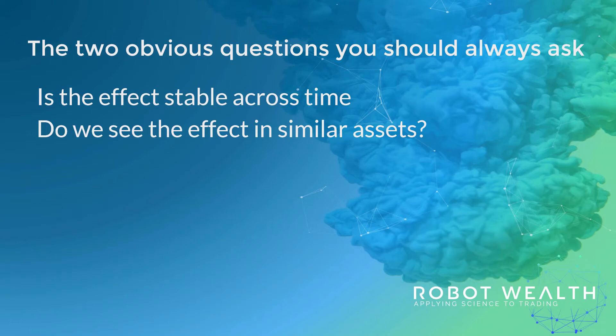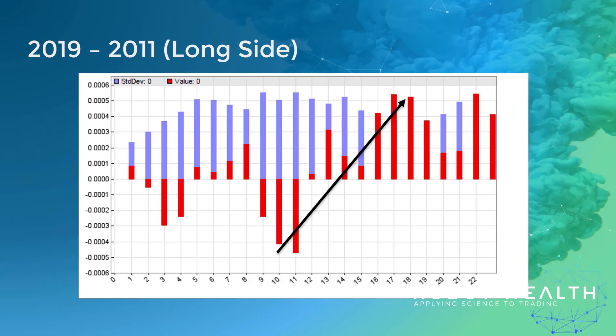I'm going to split our data into two-year periods, which means we have about 500 daily observations in each data set. If I had more assets, I would probably go down to a year. But because we've got one instrument with essentially daily observations, I'm going to subset it into two-year periods. In this video, I'm just going to look at the long side, but I recommend you look at the short side too.